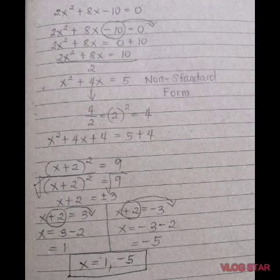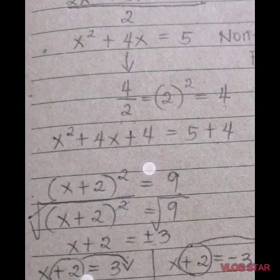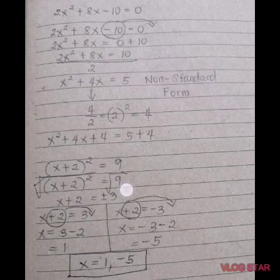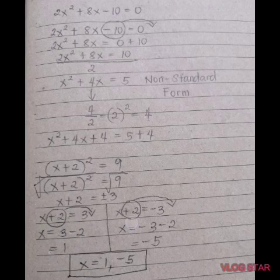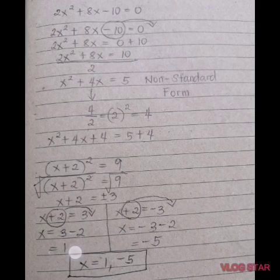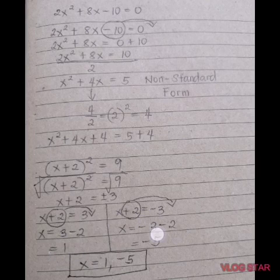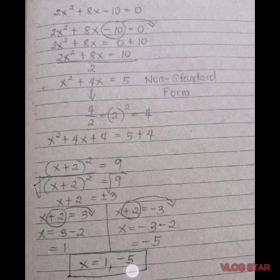Extract the square root of both sides. Cancel the radical sign and the square. What is left is x + 2 = ±3. Separate into two equations: x + 2 = 3, transpose 2 to get x = 3 - 2 = 1. And x + 2 = -3, transpose 2 to get x = -3 - 2 = -5. Therefore, the values of x are 1 and negative 5.